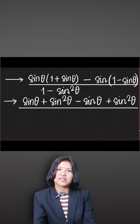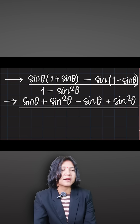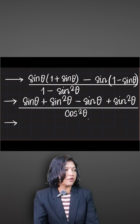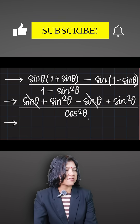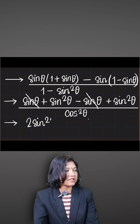There is an identity: sin²θ + cos²θ = 1, so 1 − sin²θ = cos²θ. The denominator is therefore cos²θ. In the numerator, sinθ and −sinθ cancel out, leaving two sin²θ, so the numerator is 2sin²θ.